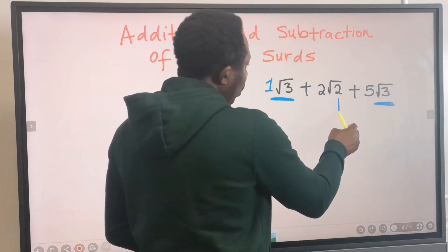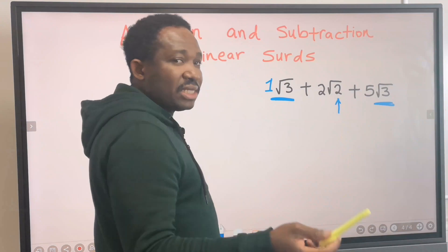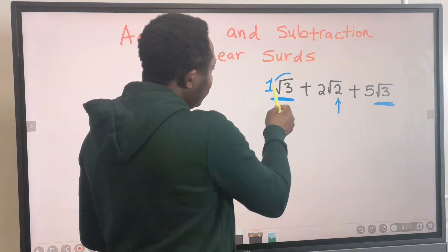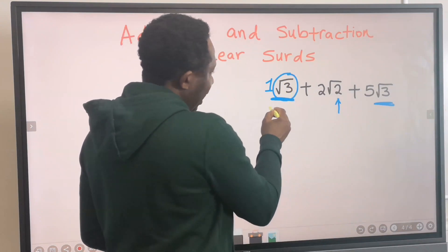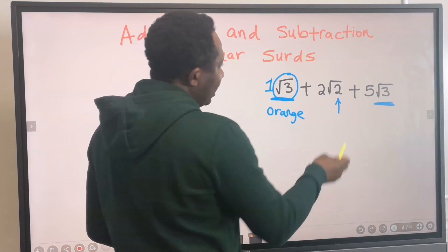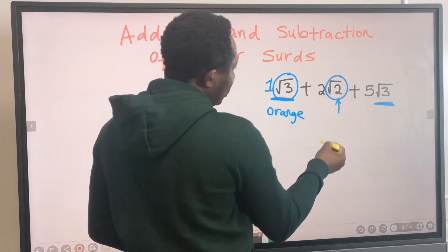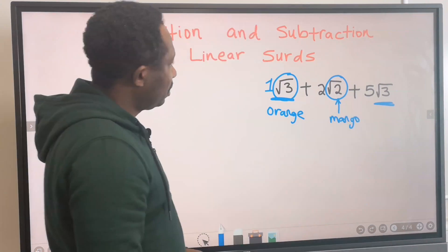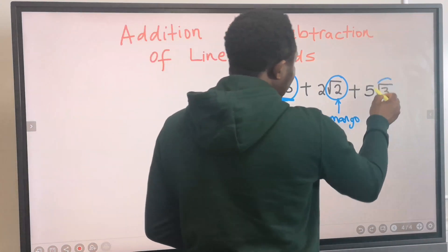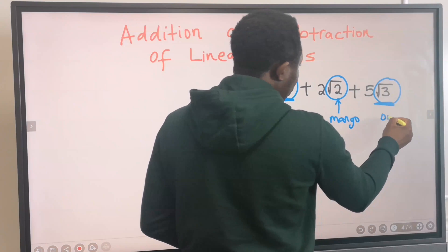Here we got root 2. Let's assume that this root 3 is an orange and this root 2 here is probably mango. That means this is also an orange.